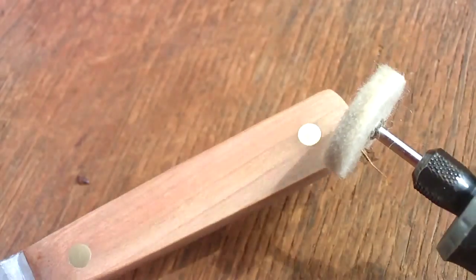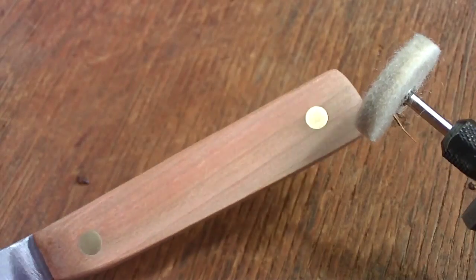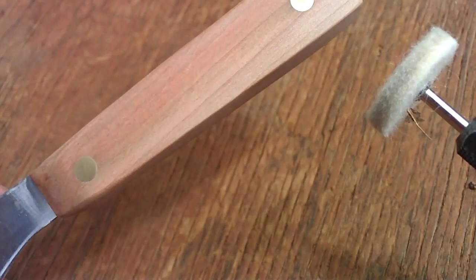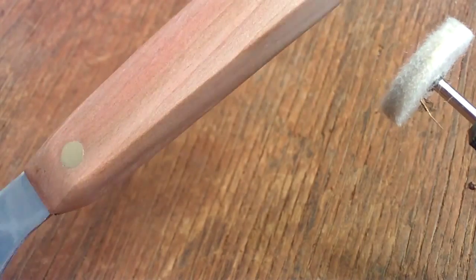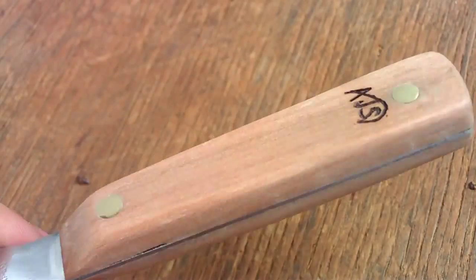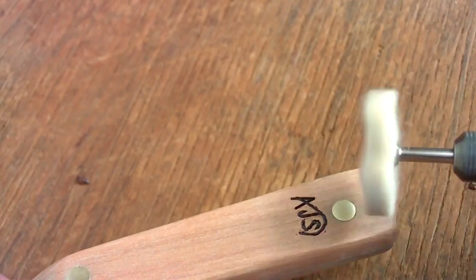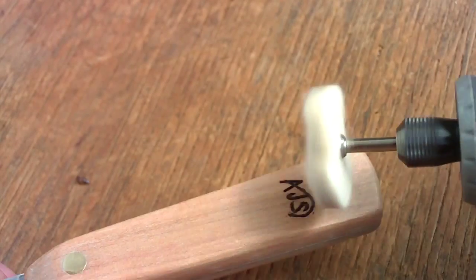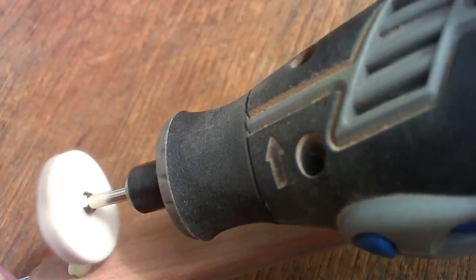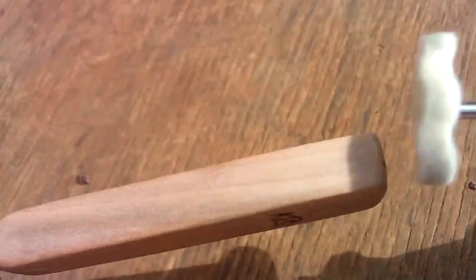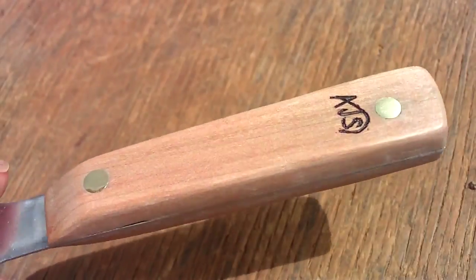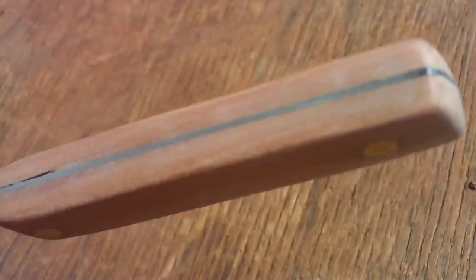So got that done. And now I'm going to buff it to get it all nice and shiny. I just use my Dremel with a buffing bit on it. And then after I buff it, I'll coat it with oil. And now I'll just continue to buff the handle all the way around.